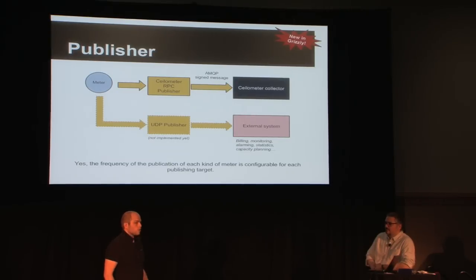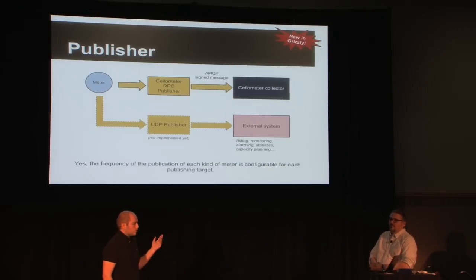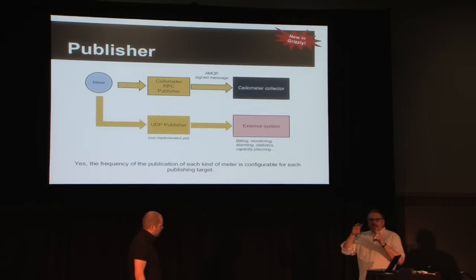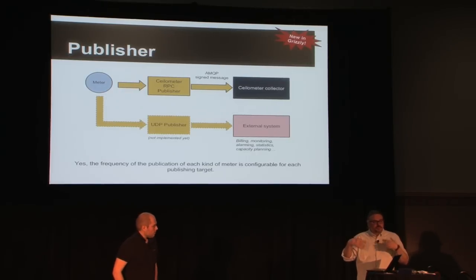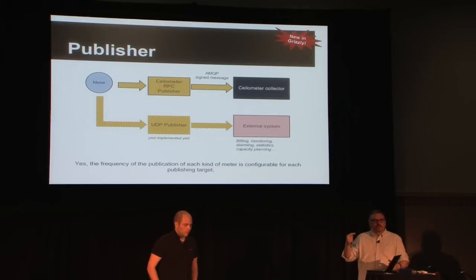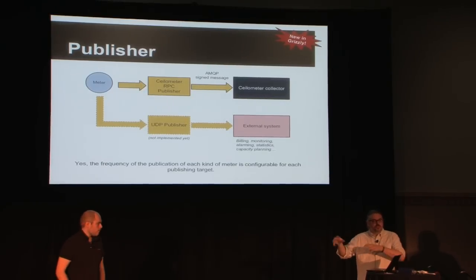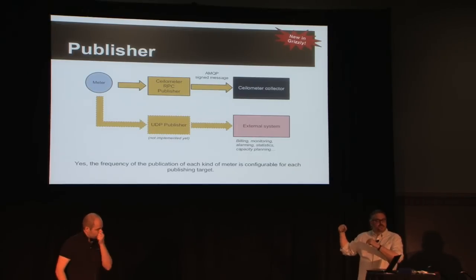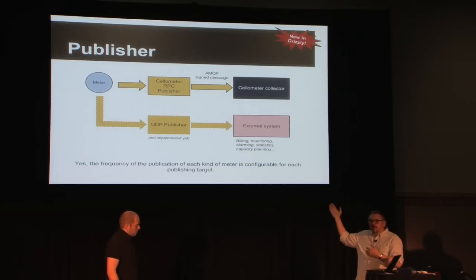We know people want a UDP publisher, so here it is at least in the diagram — to publish to an external system, which can be anything: billing, monitoring, capacity planning, whatever you want. The idea is we've written all this logic to fetch all kinds of metrics everywhere in OpenStack. Rather than having somebody else rewrite all that logic, we offer them a way to plug into the general mechanism, whether they want to get data from the Ceilometer API or using their own publisher.